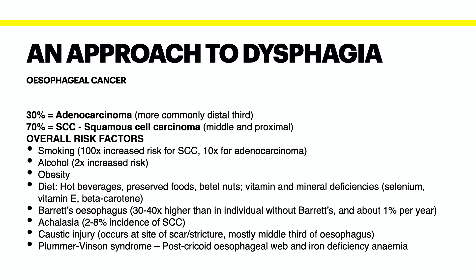Barrett's esophagus causes intestinal metaplasia of esophageal mucosa due to reflux, and this carries an increased risk of cancer due to the metaplasia-dysplasia-carcinoma sequence. The risk of cancer is typically 30 to 40 times higher than in individuals without Barrett's esophagus and is about 1% per year. Achalasia is associated with a 2 to 8% incidence of squamous cell carcinoma. With caustic injury, remember that this typically occurs where the strictures or narrowings of the esophagus are, mostly in the middle third, and cancer will develop at the site of the scar. Plummer-Vinson syndrome, which has a post-cricoid esophageal web and iron deficiency anemia, carries about a 10% risk of developing cancer in the upper third of the esophagus.